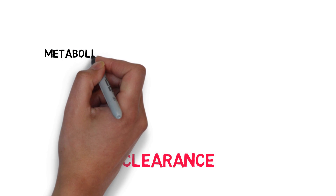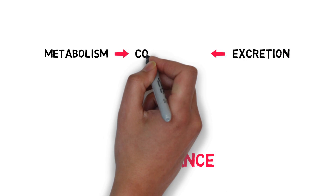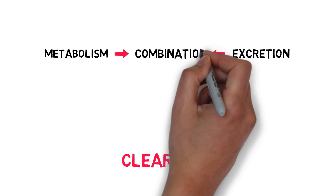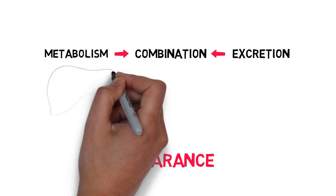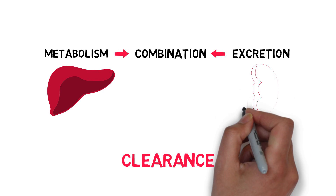After the absorption and distribution of the drug, the body will try to get rid of it. A drug can be cleared in mainly three ways: by metabolism, in which the drug is transformed into an inactive substance that's more water-soluble so that it can be excreted; by direct excretion; or by a combination of both. The exact processes that happen in the liver and in the kidney are covered in the next videos.